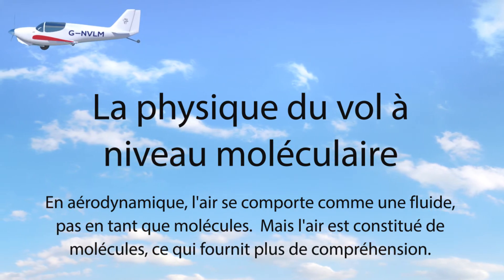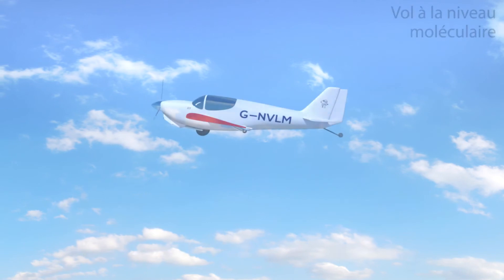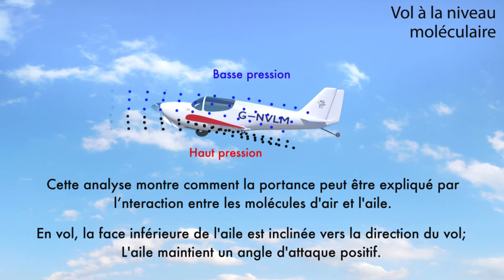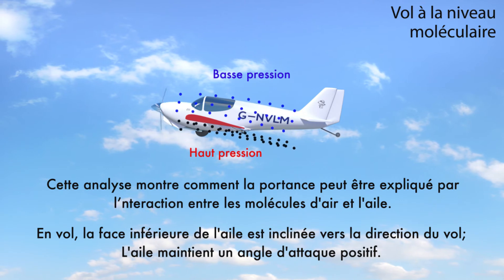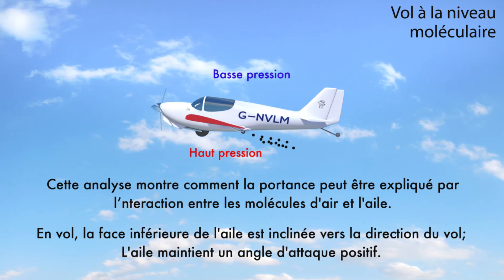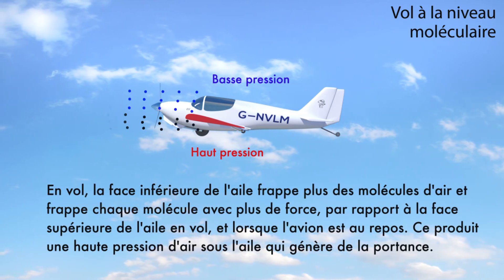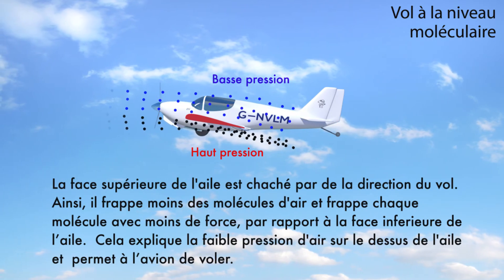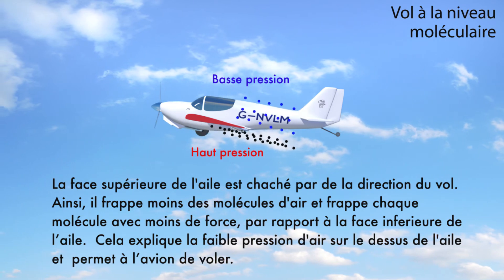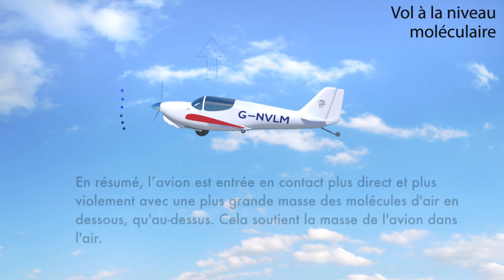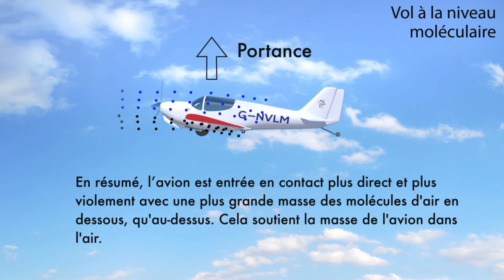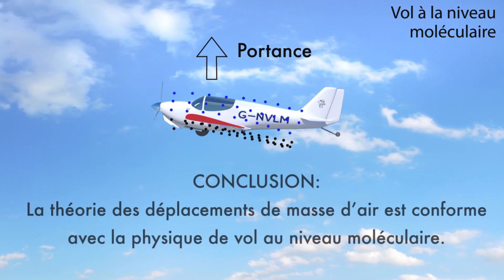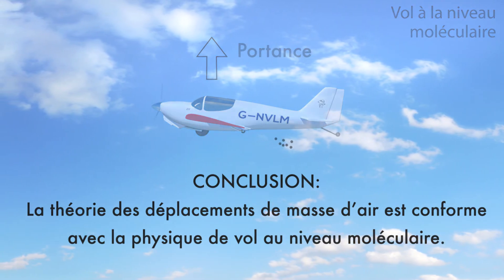Now we take a look at the physics of flight at the molecular level. This demonstrates how lift is a result of the interaction between the air molecules and the wing. In flight, more air molecules hit the underside of the wing, and each molecule strikes the wing with a greater force. The top side of the wing is angled away from the direction of travel, so it hits fewer molecules and hits each molecule with less force. So in flight, the plane comes into more direct contact, more aggressively, with a greater mass of air underneath the wing than above it. This generates lift. Consequently, the molecular explanation of how planes fly is consistent with the mass displacement theory.